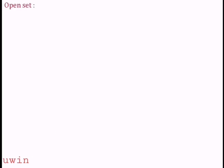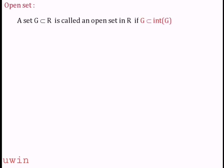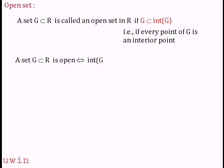Open set definition: A subset of R is called an open set in R if G is a subset of interior G — that is, every point of G is an interior point of G. That is the open set. Open sets include open intervals; the set is an open interval.